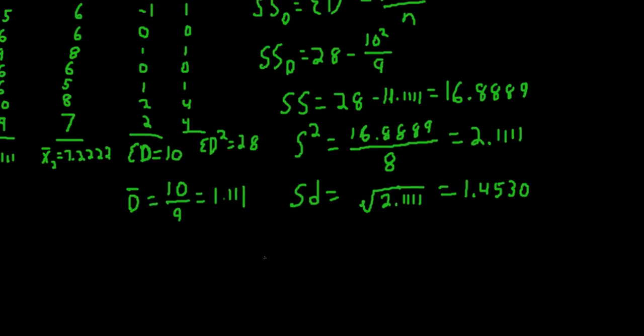And finally, to get the standard error, how much error we would expect on average in terms of the deviation between these two conditions, we can divide the standard deviation by the square root of n. So we would take 1.4530 and divide it by the square root of n, which is here 9. So 1.4530 divided by 3 will give us a standard error of the different scores of 0.4843,